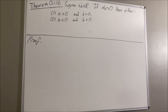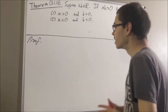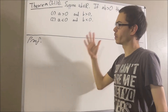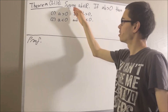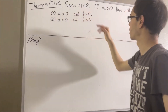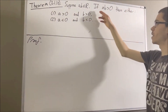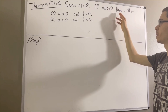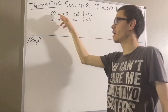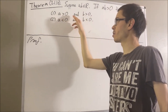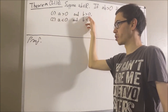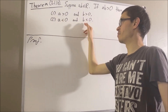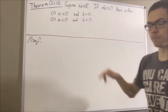Hello! In this video, we are going to prove the following theorem. Suppose A and B are real numbers. If AB is greater than zero, then either one, A is greater than zero and B is greater than zero, or two, A is less than zero and B is less than zero.